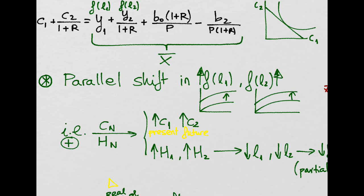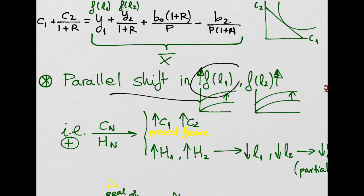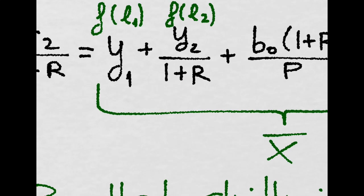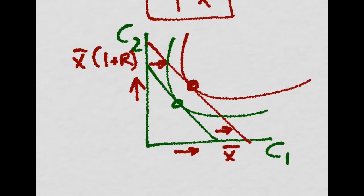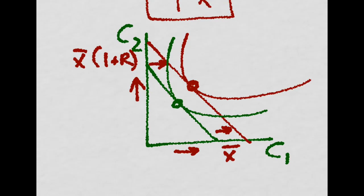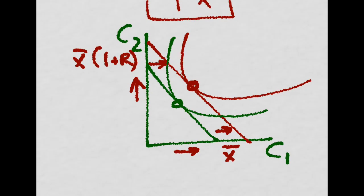After knowing the expression of the budget line, we want to see what happens when there is a parallel shift in both our present and future production functions. These two increase, so X increases, and there is a shift of our budget line. At a higher indifference curve, both present and future consumption have increased.